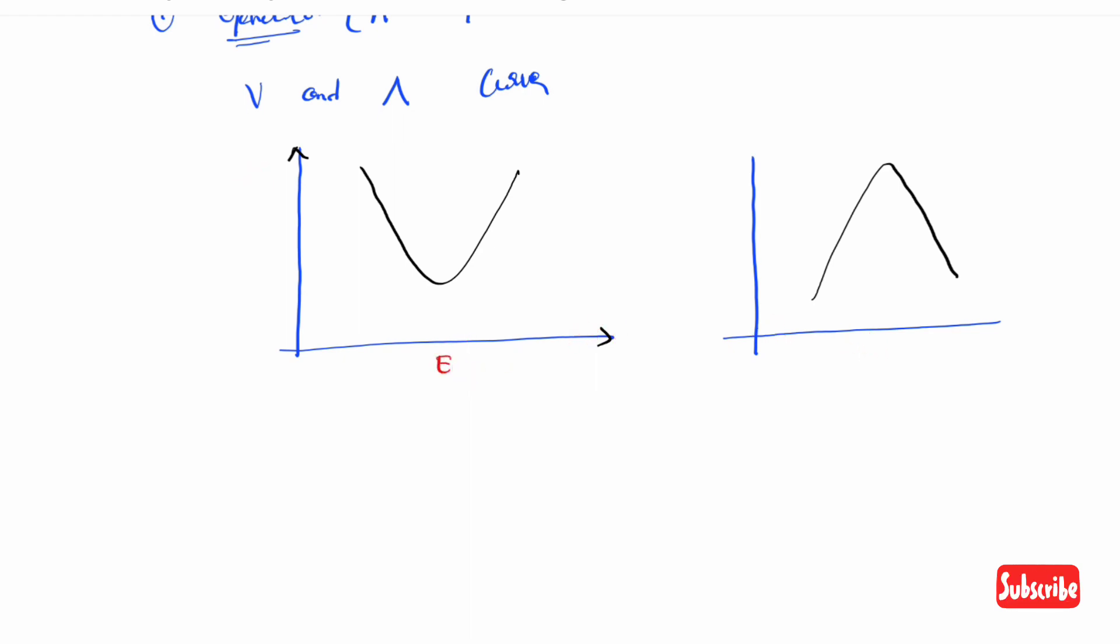The x-axis represents excitation or field current, and the y-axis represents armature current and power factor. Field current is the same as excitation. This E point here is important.